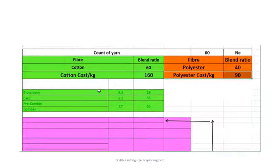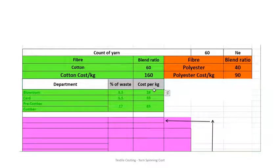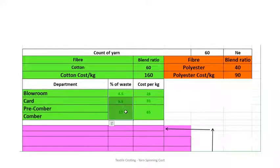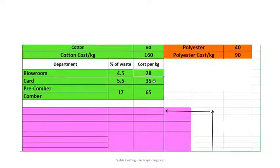Next, let us go into the waste particulars along with the revenue through waste — that is, the selling price of the waste. We have the department, waste percentage, and cost per kg. For the cotton line (shown in green), the various processes are blow room, card, pre-comber, and comber. The waste percentages are 4.5% for blow room, 5.5% for card, and 17% for pre-comber and comber combined. The waste selling prices are 28, 35, and 65 rupees per kg respectively.